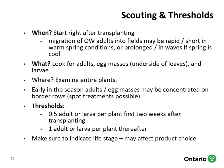Start scouting for Colorado potato beetle right after transplant. The migration of overwintering adults into the fields can be really short and quick in warm spring conditions, or it can occur in waves with prolonged emergence if the spring is cool and wet. Look for the adults, egg masses on the underside of leaves, and the larvae. Early in the season, adults and egg masses tend to be concentrated on the border rows, so spot treatments are often possible. The thresholds for tomatoes in Ontario are 0.5 adult or 0.5 larvae per plant in the first two weeks after transplanting, and one adult or one larva after that. When scouting, indicate the predominant life stage, as this can affect product choice.